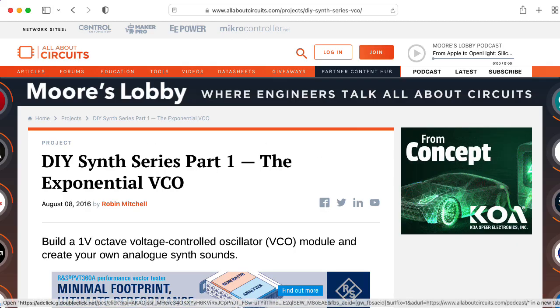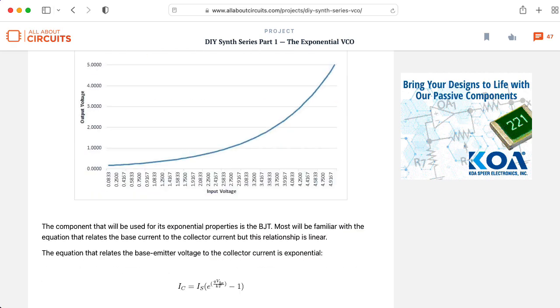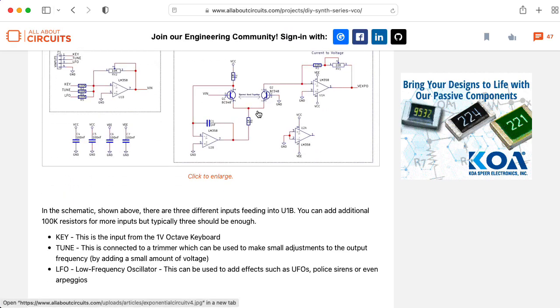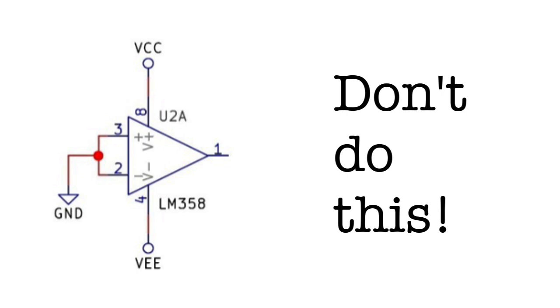So I was checking out this exponential VCO circuit from All About Circuits, and overall it seems like a reasonable design, but then I came across this. They've grounded both inputs to the op-amp, and it's operating in open-loop mode. So the output is going to saturate all the way towards one of the power rails or the other power rail based on minor variations of input currents and random fluctuations and other weirdness.